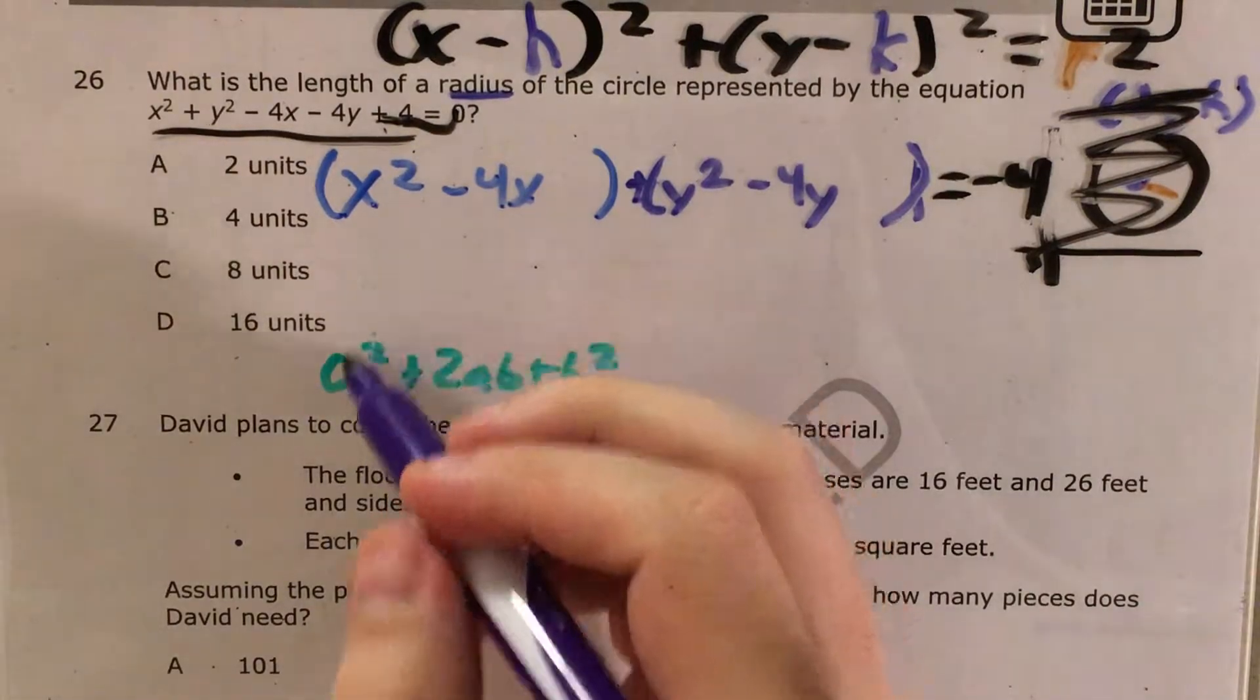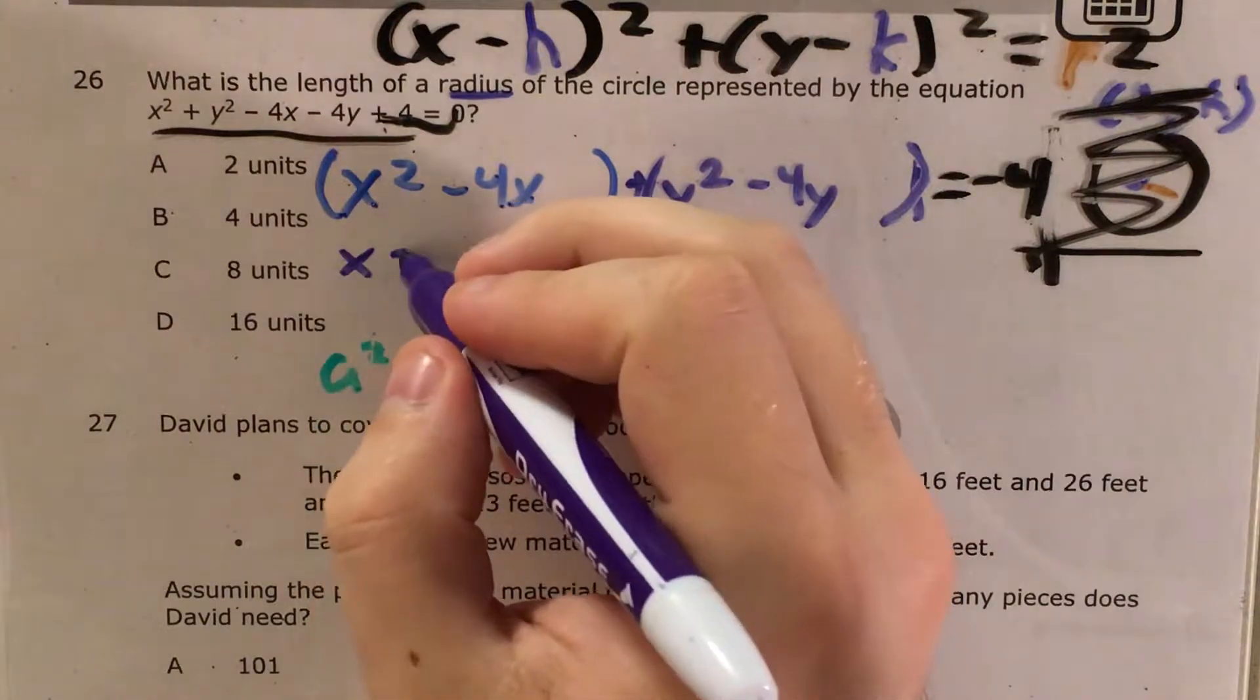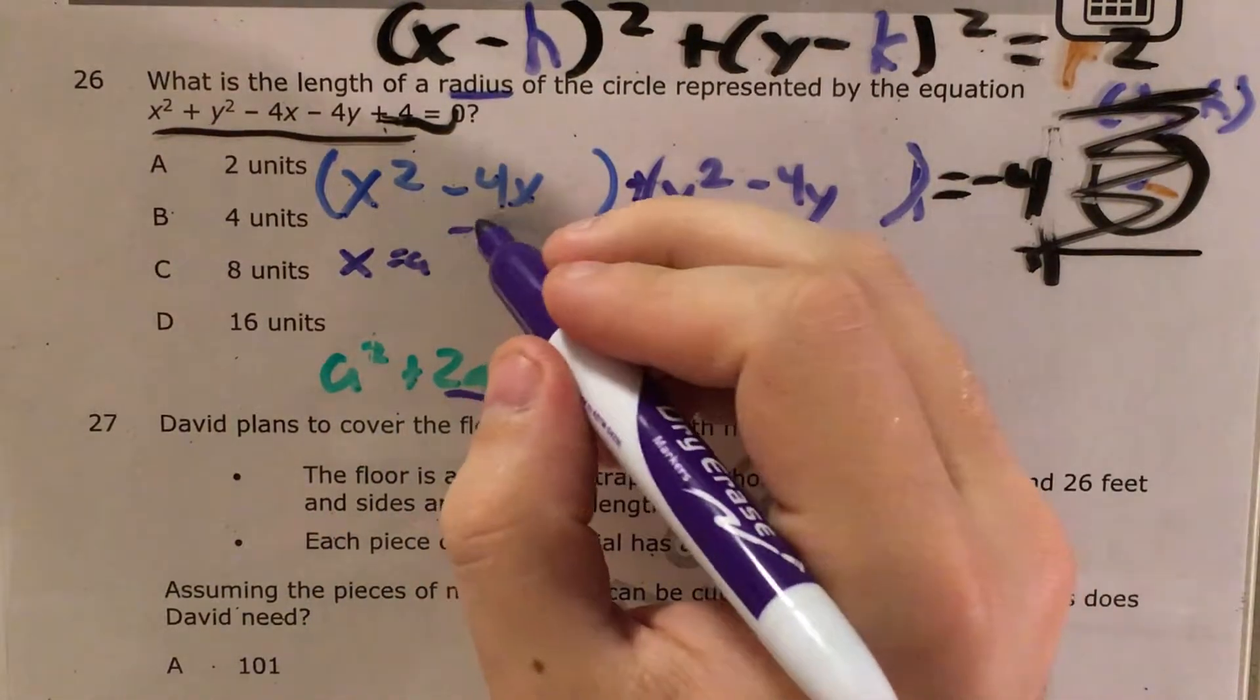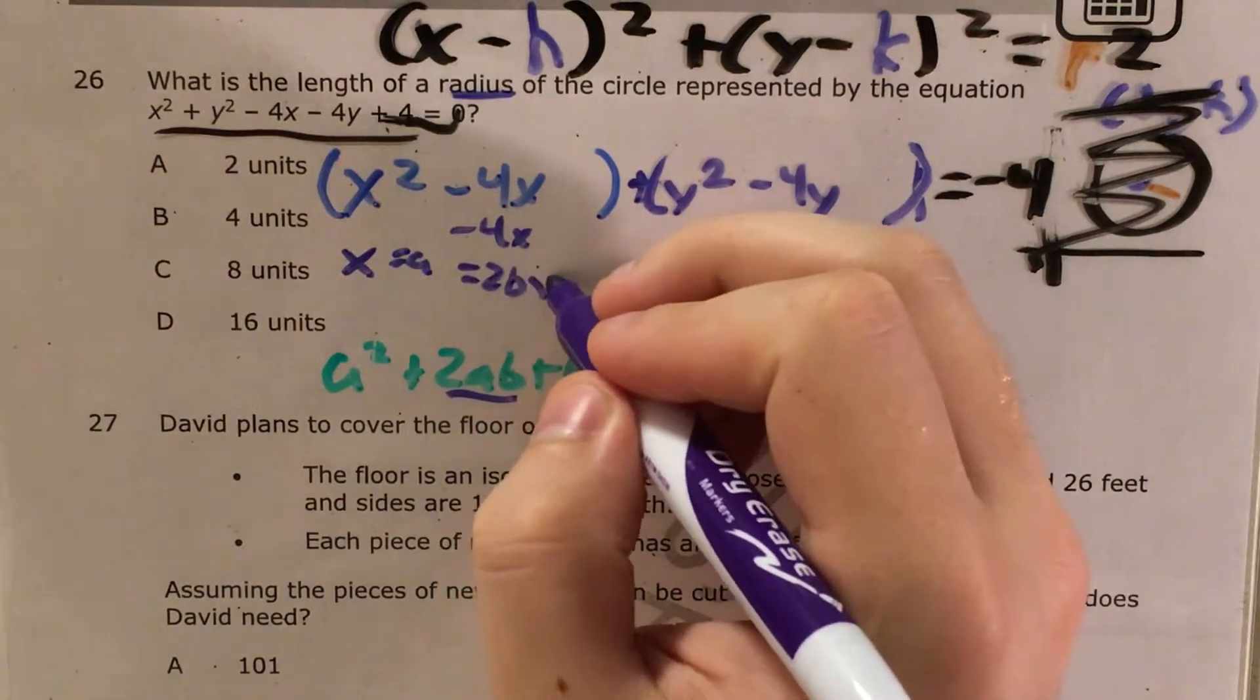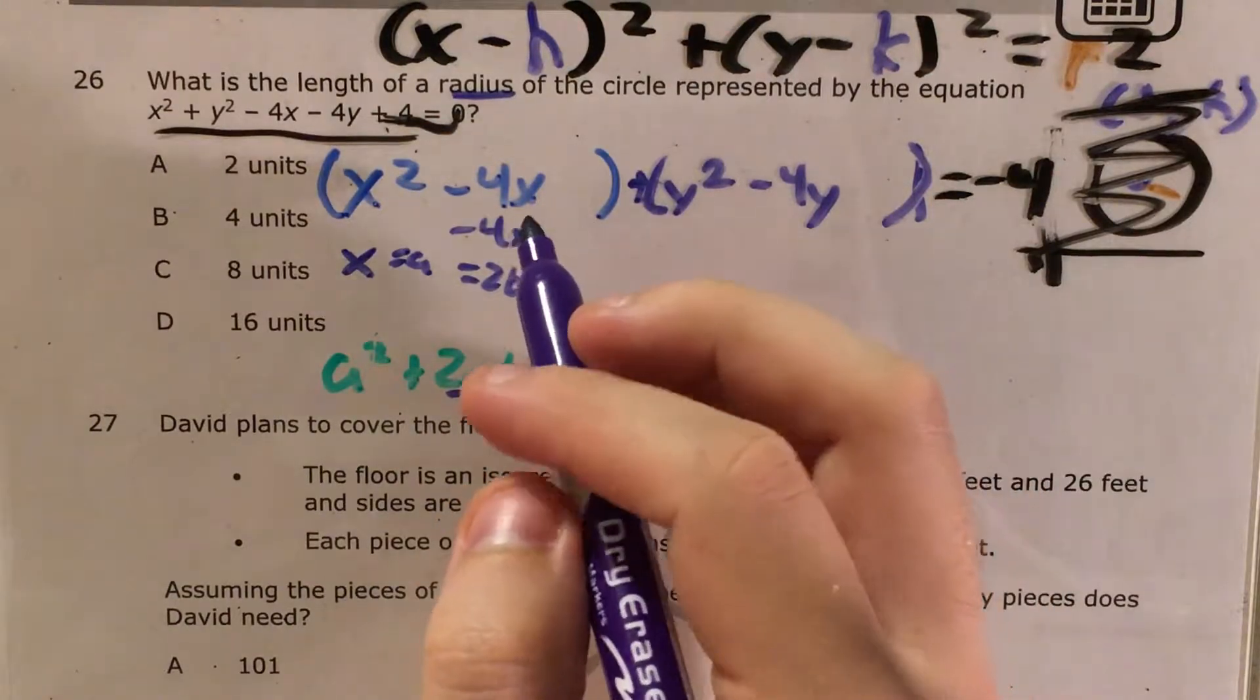So to find a, that seems pretty easy. a is just x. Now for the 2ab part, that tells me that negative 4x equals 2ab. And this tells me, if we cross out x from both sides, I know that 2b equals negative 4.